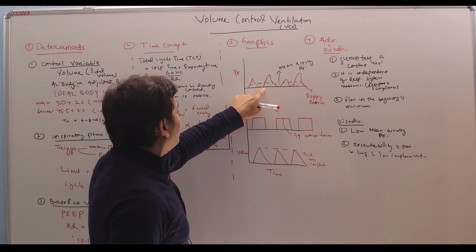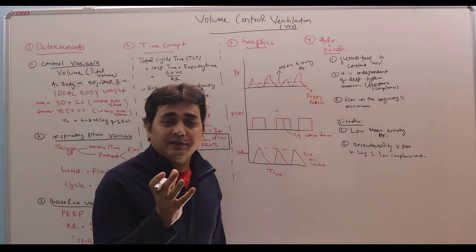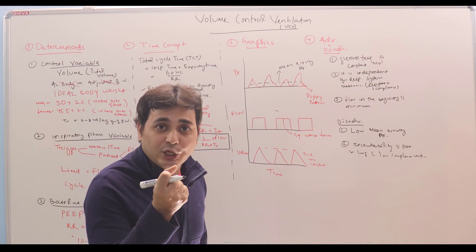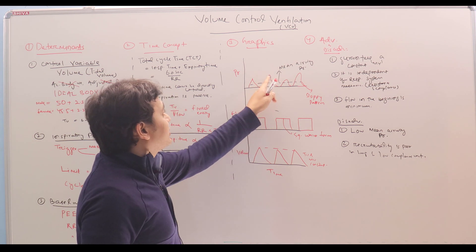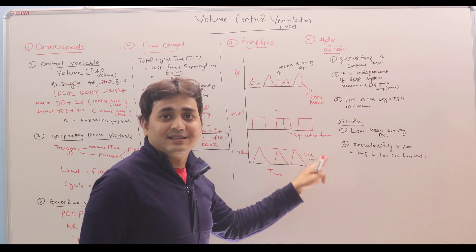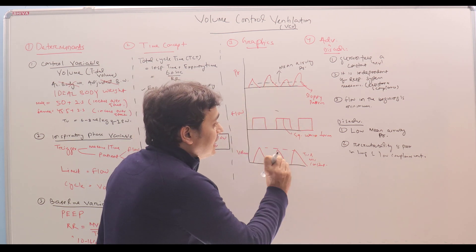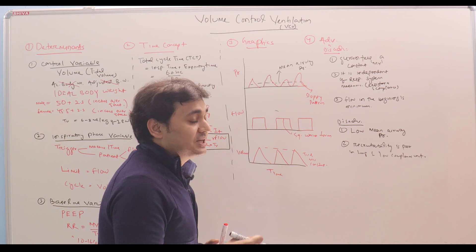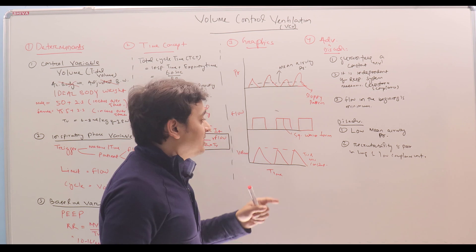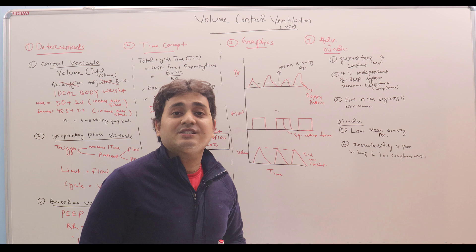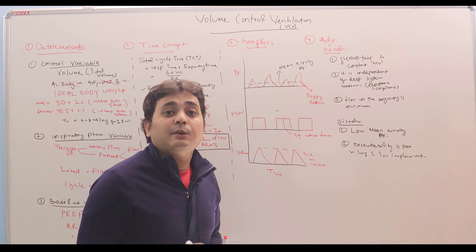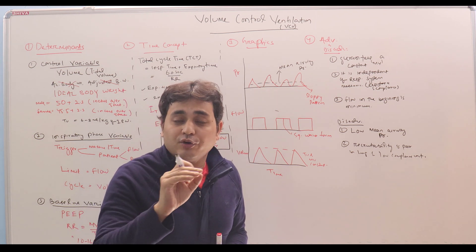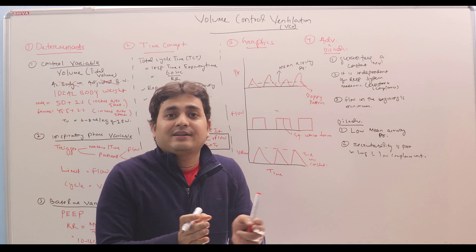Second will be recruitability is poor in lung with low compliance units. You can see the pressure is increasing gradually from very minimum to the maximum. So if an alveoli is having a very low compliance, it can be such that the alveoli just starts filling, just starts getting recruited, when the pressure is reaching here. But it is not sustained. So as soon as it is getting recruited, it is again cycling to expiration. So the lung units who have a low compliance, that will not be recruited using this method. There is a reason why it is said that in volume control ventilation, there will be some part of the alveoli that will always stay de-recruited. And the recruitment will be better in pressure control ventilation. Because the pressure is maintained at a value for a certain period of time so that all the alveoli can expand, can inflate. So this is one of the disadvantages of volume control ventilation.